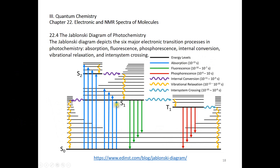We have several electronic states here. S0 is the ground singlet electronic state. S1 and S2 are also singlet electronic states — S1 is the first excited and S2 is the second excited singlet electronic state. We also have the T1 electronic state. On top of S0 you can see a bunch of lines — those are vibrational energy levels. S1, S2, and T1 also each have many vibrational energy levels.